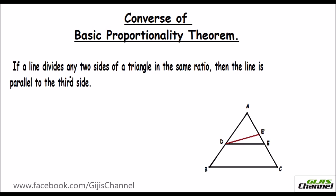If a line divides any two sides of a triangle in the same ratio, then the line is parallel to the third side. In the basic proportionality theorem, we learnt that if the lines are parallel, then it divides the sides in the same ratio. Here, it is just the converse of what we learnt in BPT.